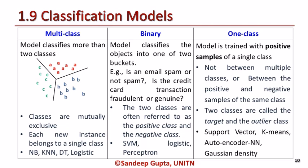The multi-class classification model is designed for classification of more than two classes. Typically, classes are mutually exclusive, and each new instance belongs to a single class. Some of the widely used classifiers for a multi-class classification model are Naive Bayes, k-nearest neighbor, decision tree, and logistic regression.